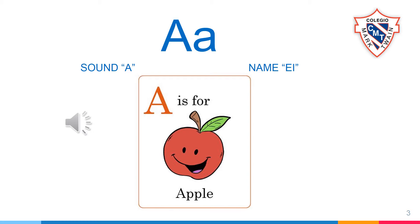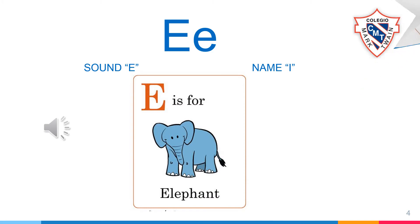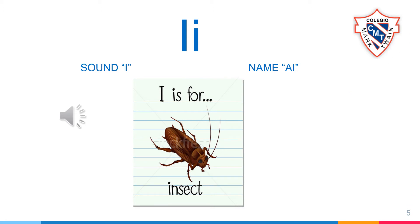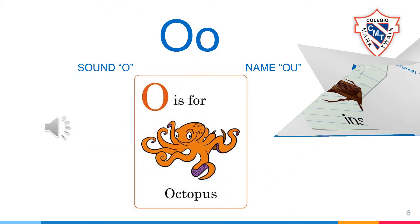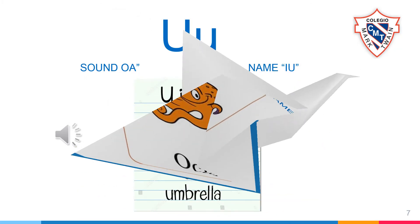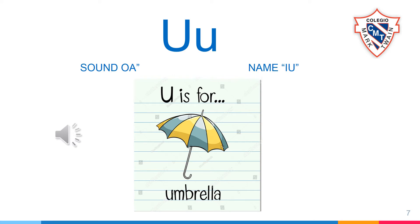A is for Apple. E is for Elephant. I is for Insect. O is for Octopus. U is for Umbrella.